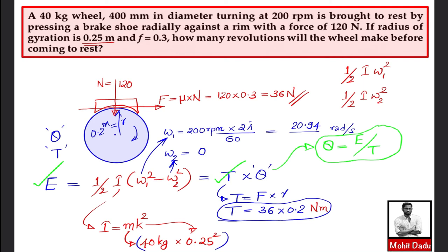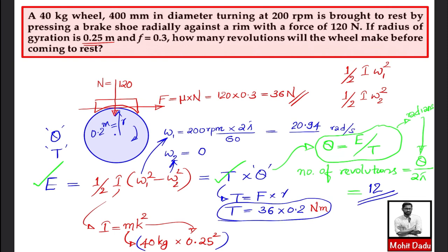Since one revolution corresponds to an angle of 2π radians, the number of revolutions = θ / (2π). Substituting the values, the result is approximately 12 revolutions. This means the wheel makes 12 revolutions before coming to rest from an initial speed of 20.94 rad/s under the action of the frictional force applied by the brake shoe.